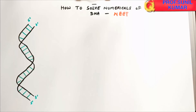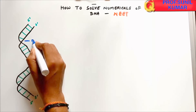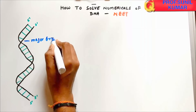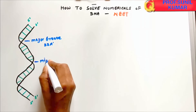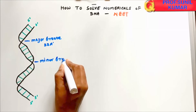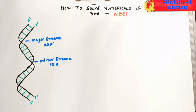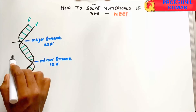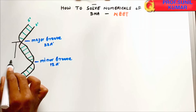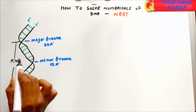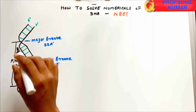Let's look at numericals based on DNA. In a simple diagram of DNA, the major groove is around 22 Angstroms, and the small one is called the minor groove, which is 11 Angstroms. The distance between two minor grooves is called the pitch of DNA.